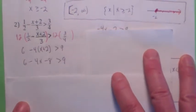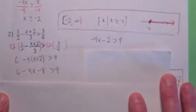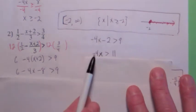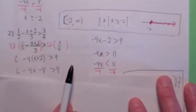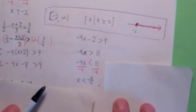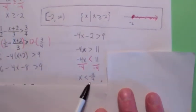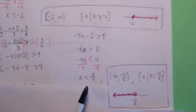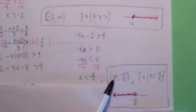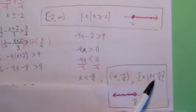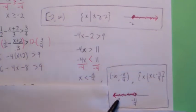Use the distributive law. Combine like terms. Add 2 to both sides. Now remember, when you divide by negative 4, your final answer is going to be x is less than or equal to negative 11 over 4. In interval notation, you're going to have negative infinity to negative 11 fourths, open on both. Set of all x such that x is less than negative 11 fourths. And this would be everything to the left of negative 11 fourths with an open circle.